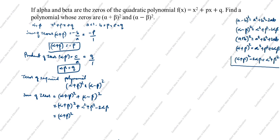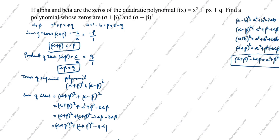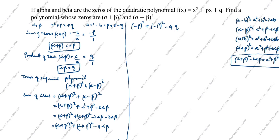Simplifying: sum of zeros = 2(α+β)² − 4αβ. Now substituting α+β = −p and αβ = q: sum = 2(−p)² − 4q = 2p² − 4q, which equals 2(p² − 2q).